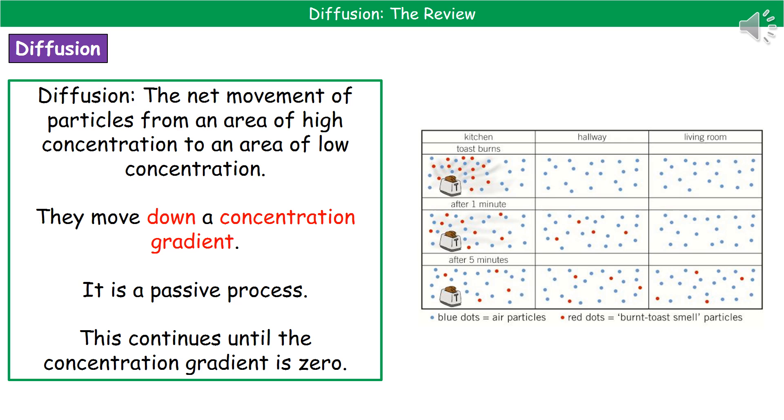So the way we could also write that is by saying that those particles are moving down a concentration gradient. Now do go careful with the phrasing of that one. Don't use phrases like across or along and don't use the phrase diffusion gradient ever. So if you're talking about it in terms of the gradient, they move down the concentration gradient.